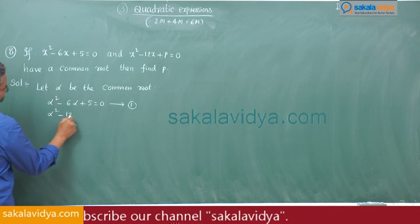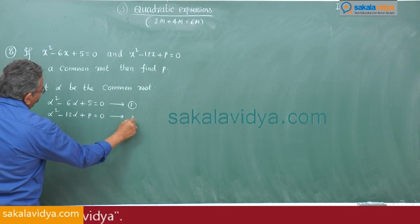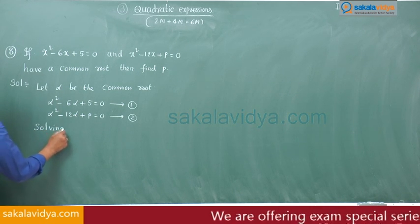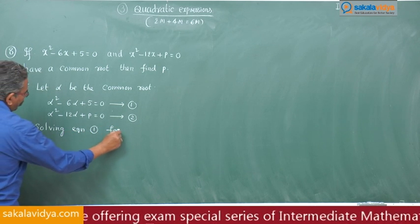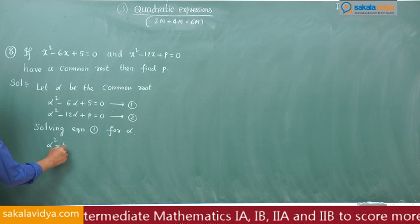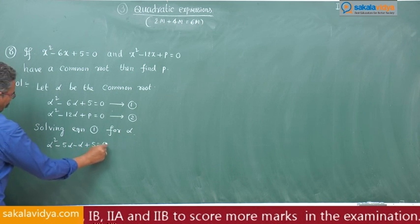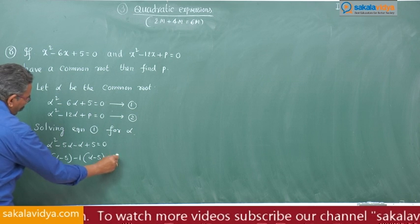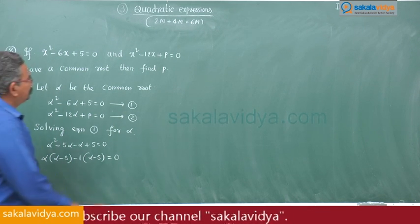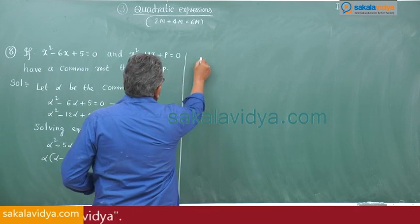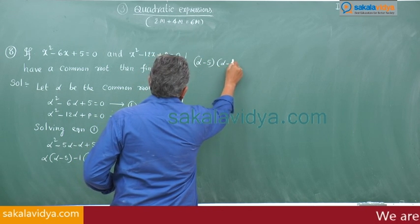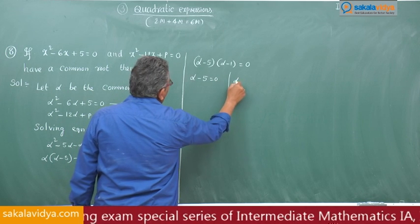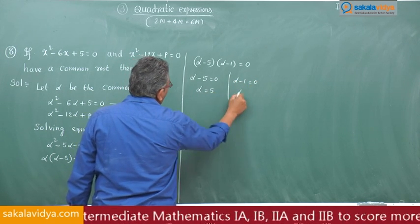Next, alpha squared minus 12 alpha plus p is equal to 0 — equation 2. Solving equation 1 for alpha: alpha squared minus 5 alpha minus alpha plus 5 is equal to 0. Taking alpha common: alpha times alpha minus 5, minus 1 times alpha minus 5 is equal to 0. So alpha minus 5 is equal to 0 or alpha minus 1 is equal to 0, giving alpha is equal to 5 or alpha is equal to 1. That means two cases will arise.